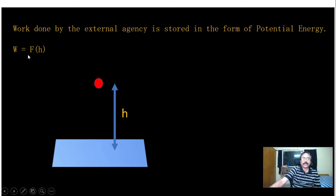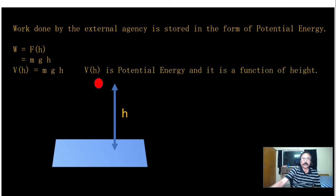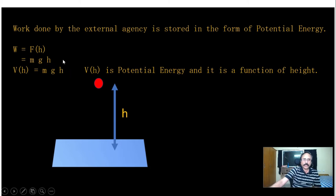The force is the weight of the body, mg, and the displacement is h. Therefore, work done equals mg multiplied by h, giving us mgh. This work done is stored in the form of potential energy — as discussed, potential energy is stored energy. Potential energy is a function of height: if you increase the height, the potential energy increases.